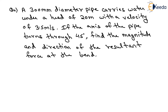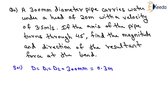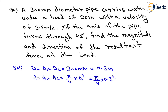Since the diameter is already given in the question, we write d = d1 = d2 = 300 mm, which converts to 0.3 meters. We then find the cross-sectional area of the pipe: A = A1 = A2 = (π/4) × D². Substituting D = 0.3 m, we get A = 0.07068 m².